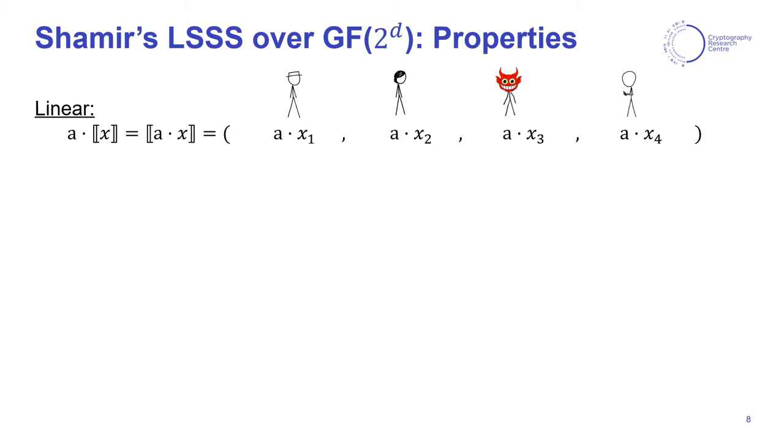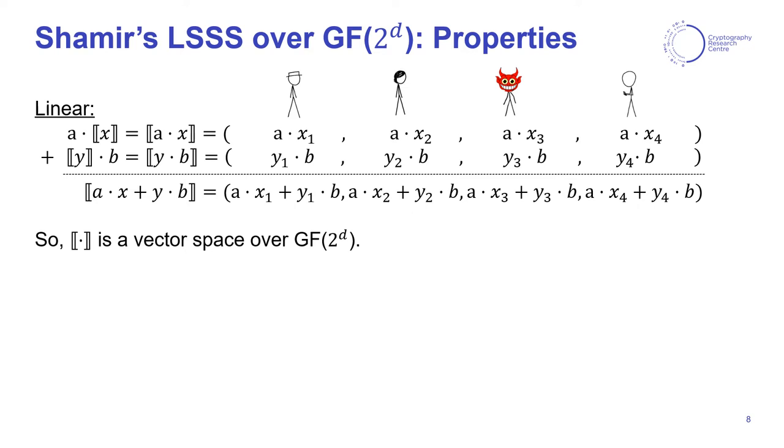Before moving to more general structures, let's have a look at some properties of Shamir's scheme. First of all, Shamir's scheme is linear, meaning that we can multiply a secret with a public scalar by locally computing the product between the scalar and the shares. Moreover, we can do this on both sides and add the results together, resulting in what you would expect.